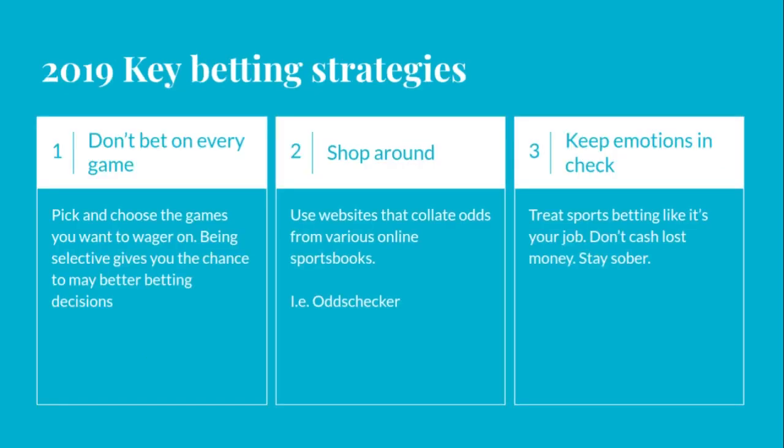Strategy number one: don't wager on every game in the NFL week. You need to pick and choose the games you want to wager on. Focus on those key battles that are going to offer good value and get behind those games, rather than picking winners for all however many games there are during the week. If there are eight games in one week, don't wager on all eight. For example, if you can only find value in two games out of ten, only go with those two. Don't worry about the others if you can't find the key edges you need to win.